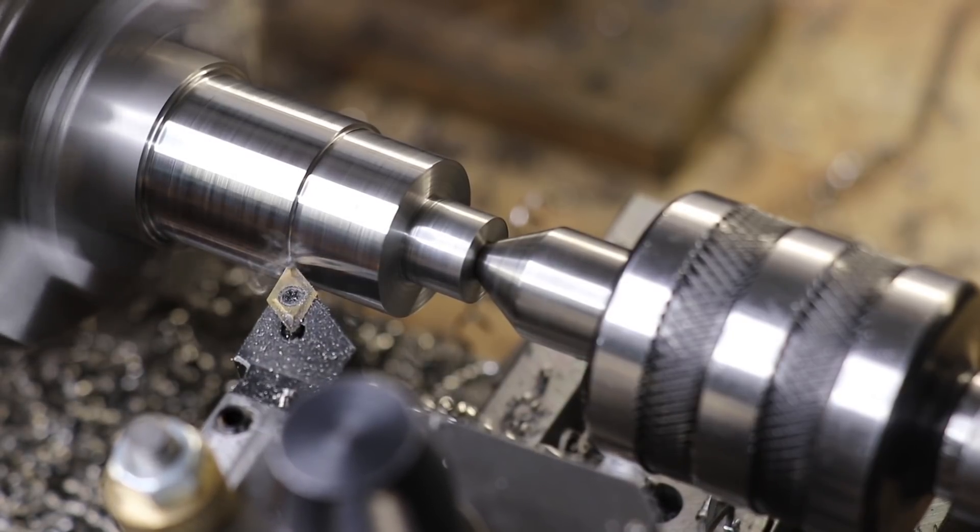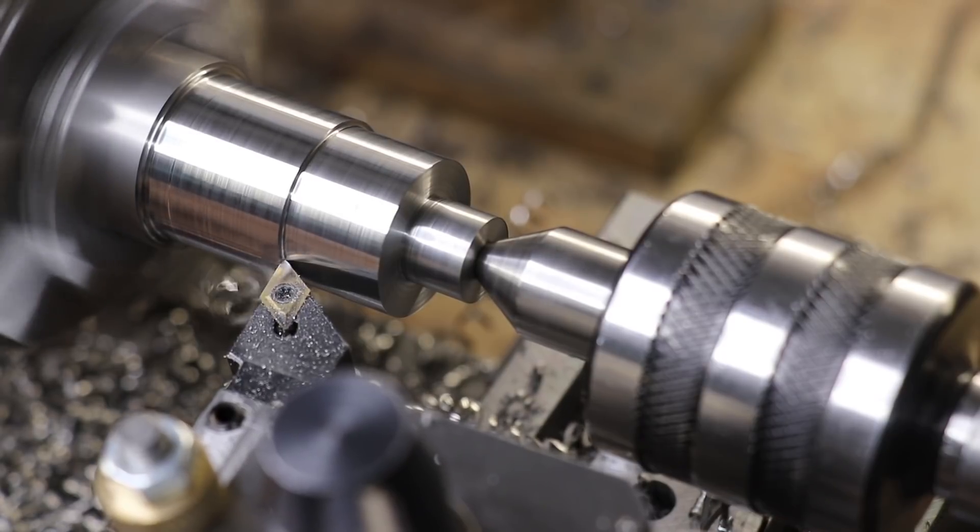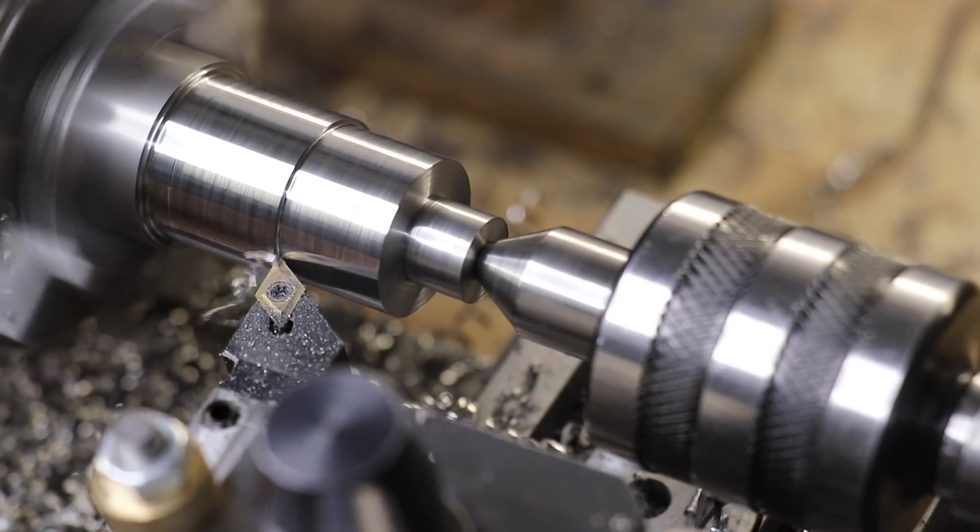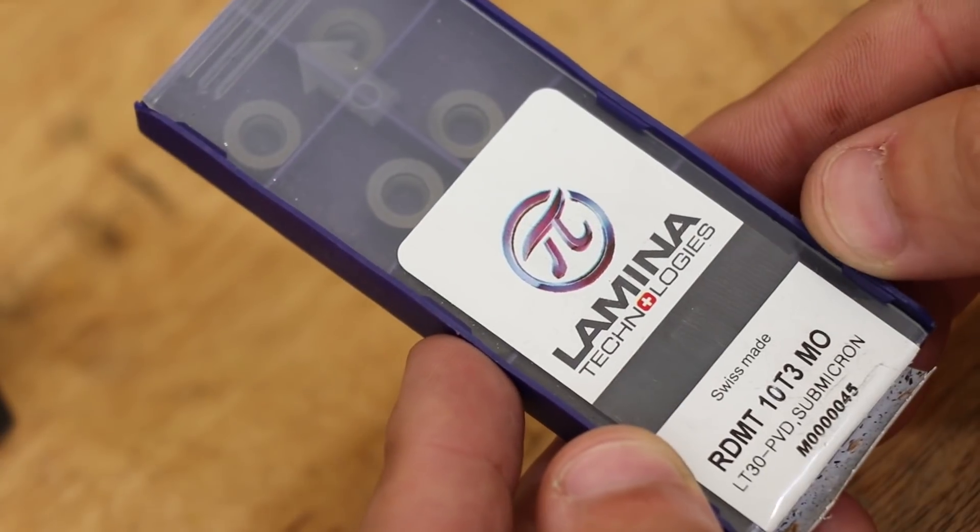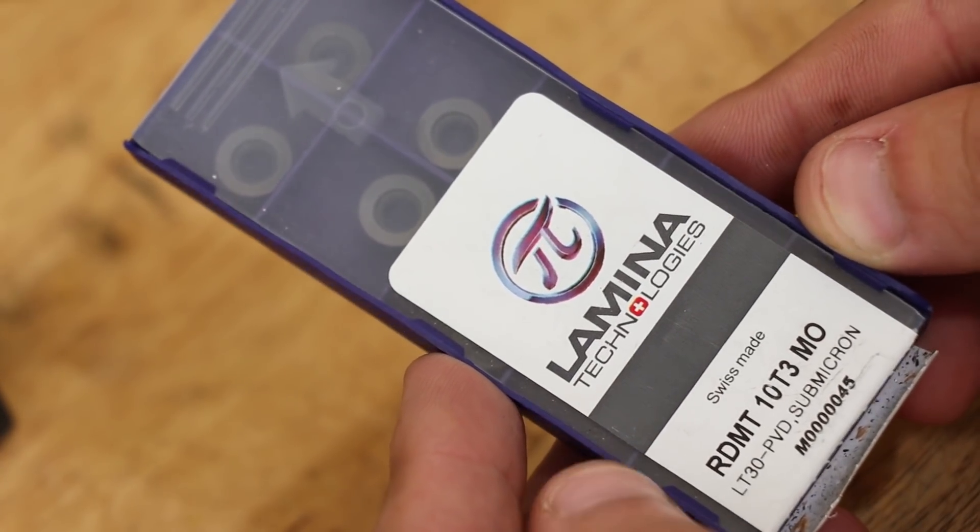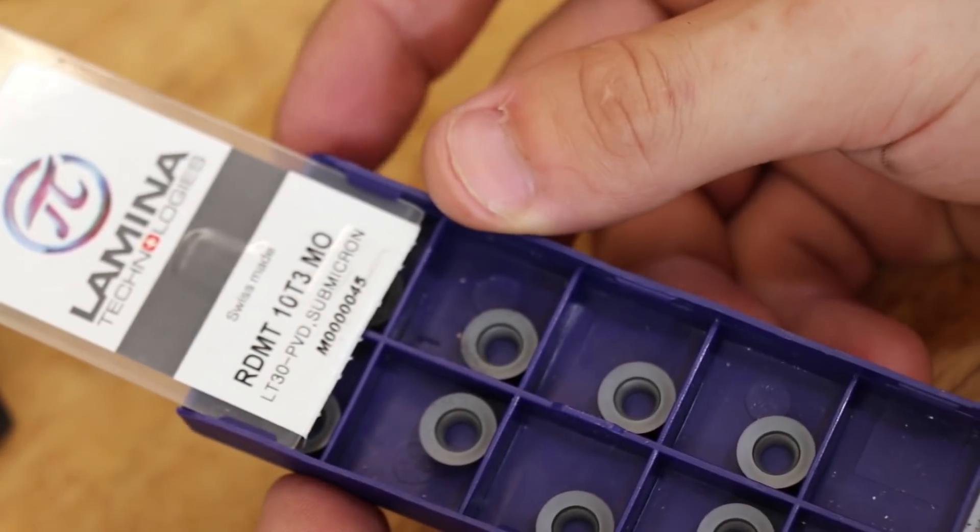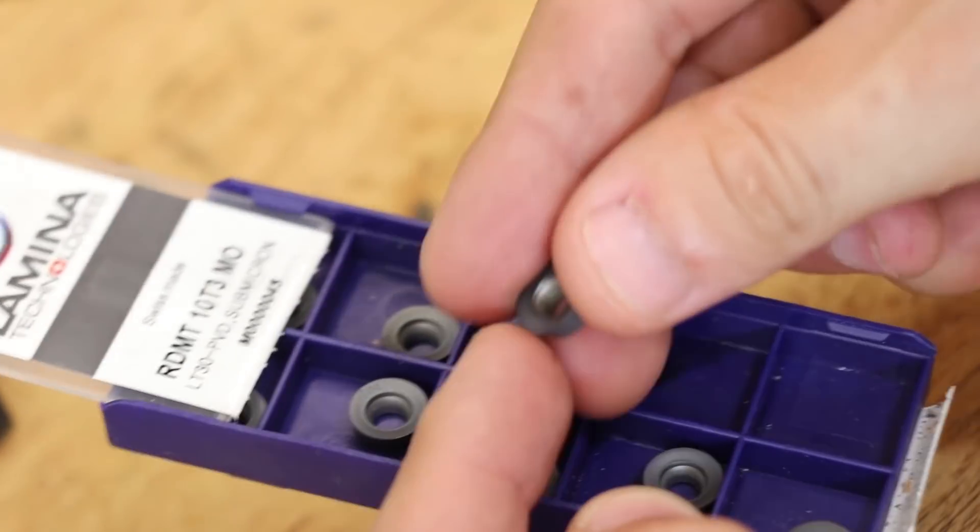Now even though this DCMT insert gives me a really good surface finish I think we can do a lot better. A while back I bought these circular inserts and strictly speaking these are made for face mills. But they should give us an excellent surface finish here on the lathe.